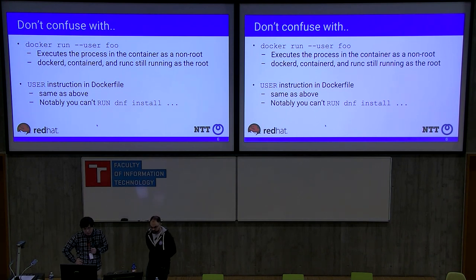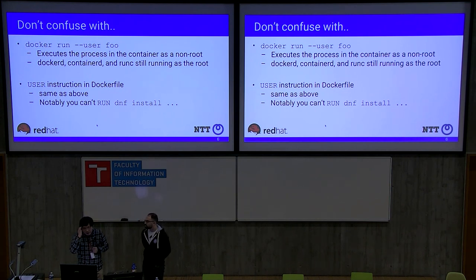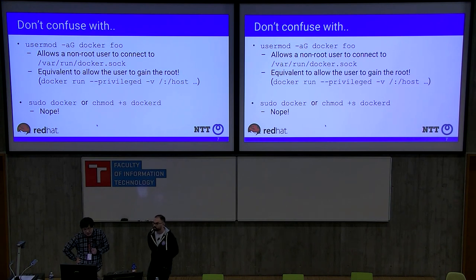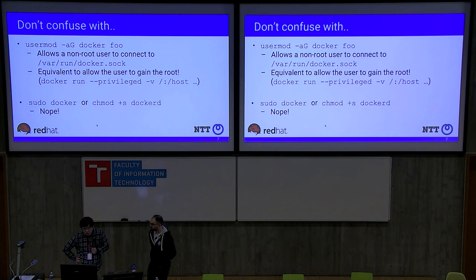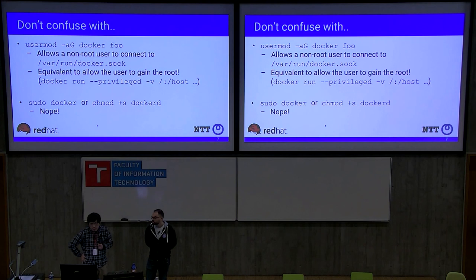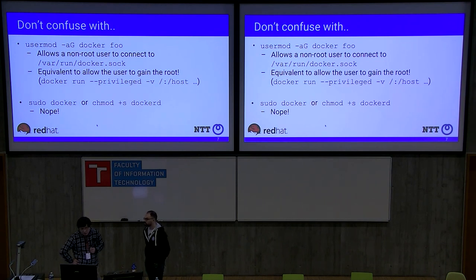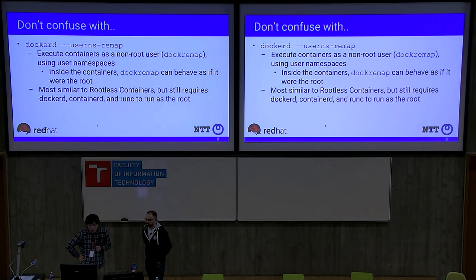Our work is also different from the USER instruction in a Dockerfile, which is the same as 'docker run --user' — notably you can't run 'dnf install' because you are not root in the container. It is also different from 'usermod -aG docker foo', which adds user foo to the docker group, granting essentially root on the host — the user could do 'docker run --privileged -v /:/host' to gain root. And of course our work is not about running 'sudo docker' or setting the setuid bit on the dockerd binary.